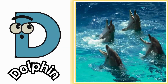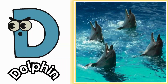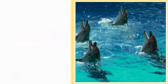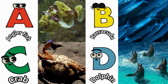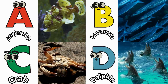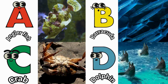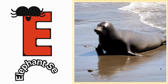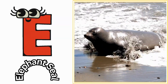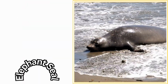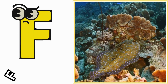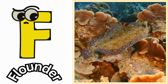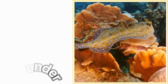D is for dolphin. Juh, guh, dolphin. E is for elephant seal. Ah, ah, elephant seal. F is for flounder. Fuh, fuh, flounder.